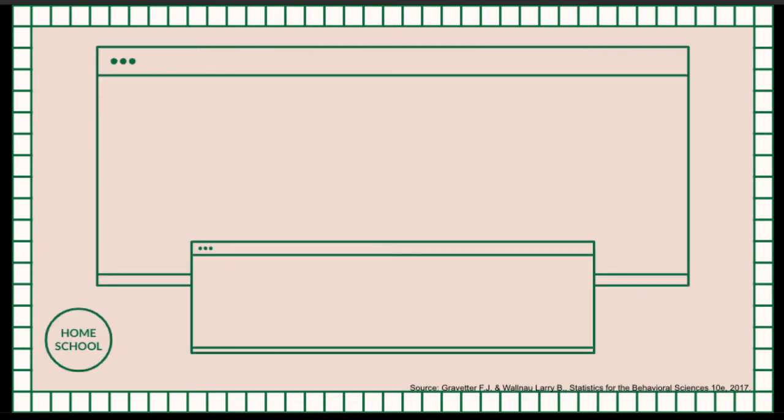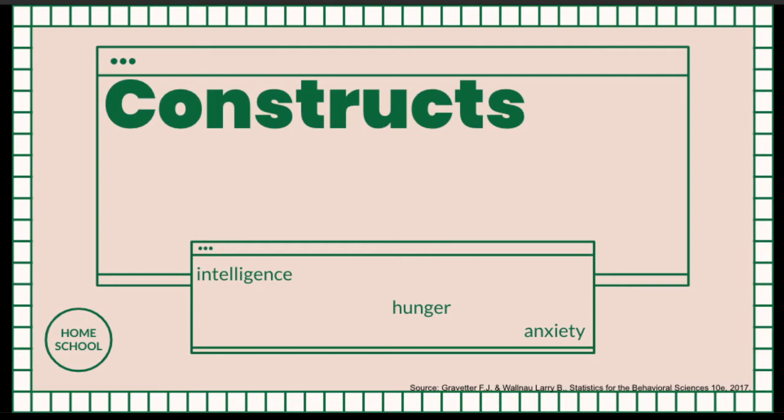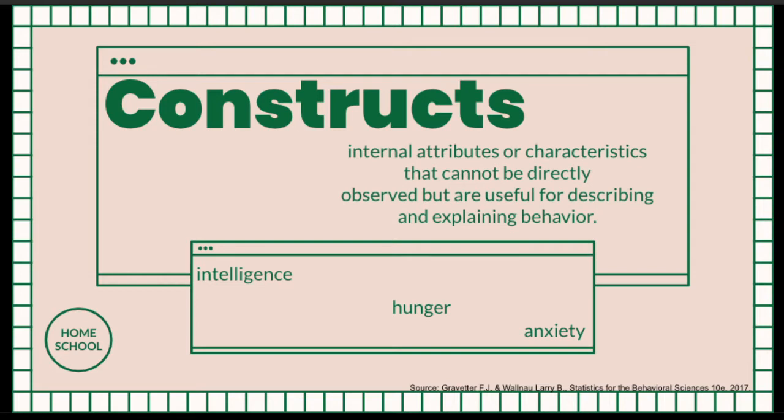We have variables like intelligence, hunger, anxiety. So these variables, we call these as constructs. It is constructs because it is an internal attribute or characteristics that cannot be directly observed, or we call these as intangible. And oftentimes, they are called hypothetical constructs.